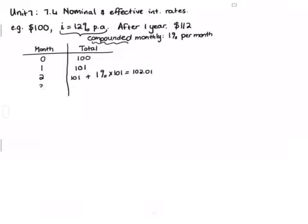End of month three you have your 102.01 plus one percent of that, so it's 103.03. Skipping ahead to end of month 12, it comes to a hundred and twelve dollars and sixty-eight cents.